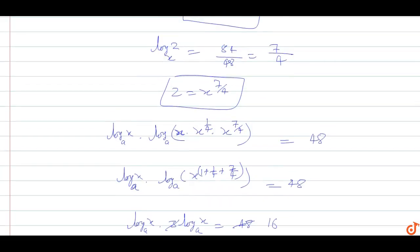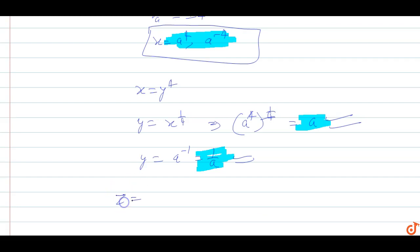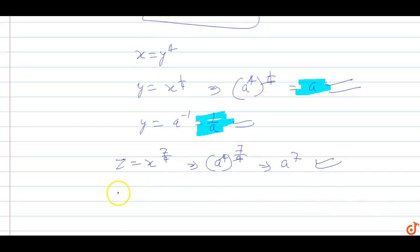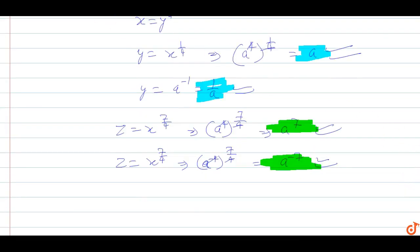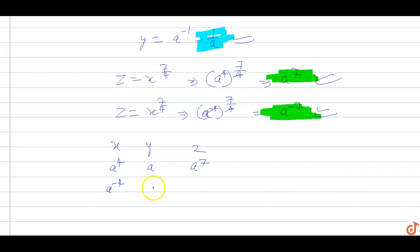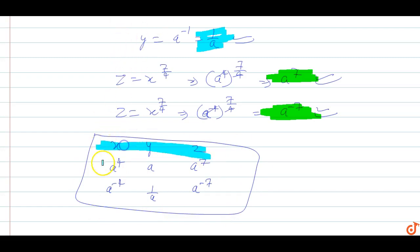Since z equals x to the power 7 by 4: when x equals a to the power 4, z equals a to the power 7. When x equals a to the power minus 4, z equals a to the power minus 7. So the two solution sets for x, y, z are: x equals a⁴, y equals a, z equals a⁷, and x equals a⁻⁴, y equals 1/a, z equals a⁻⁷.